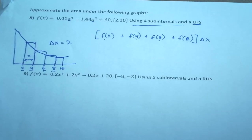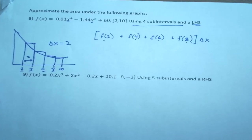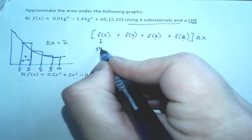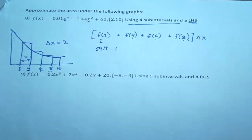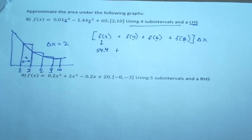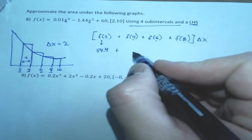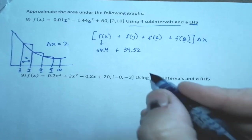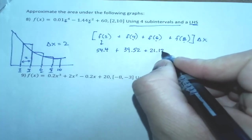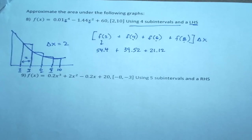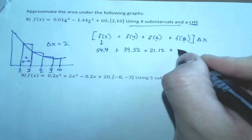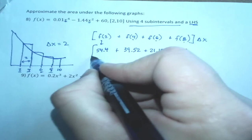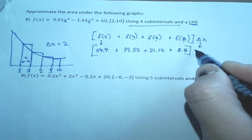So let's go ahead and find the height of the first bar. So the height of the first bar is 54.4. The height of the second bar will be 39.52. The next one will be 21.12. And f of 8 will be 8.8. And delta x, we already said, was 2.